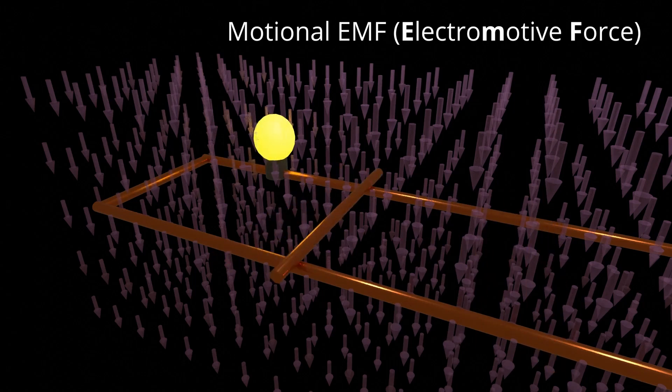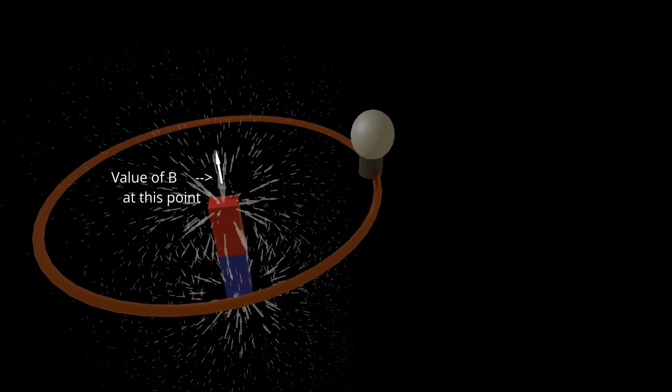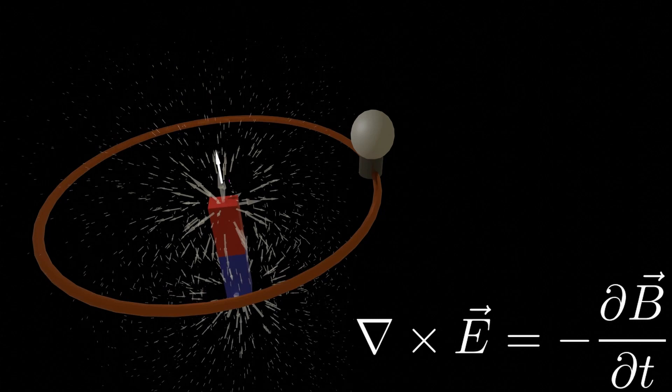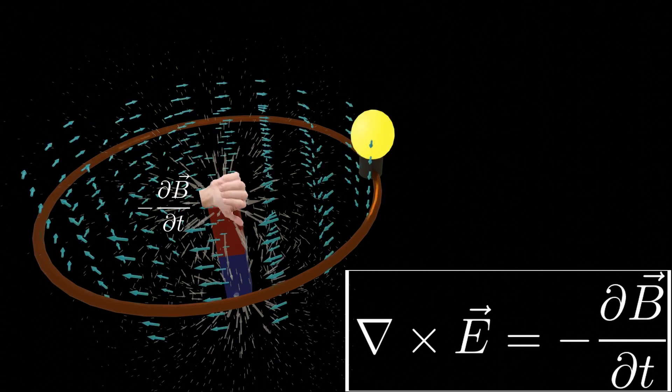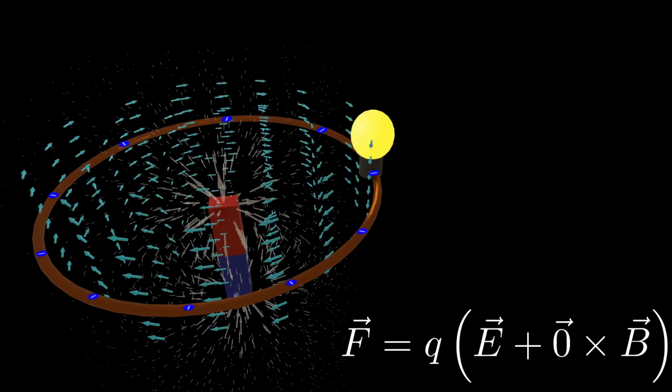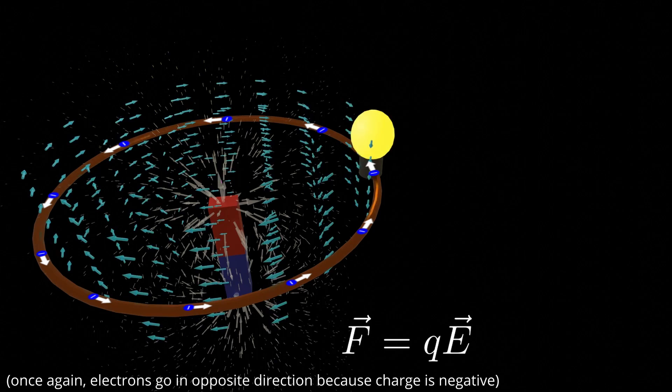What about our regular magnet coil? Well as the magnet gets nearer, Barry increases in the coil. We know that Emily curls when Barry changes and Barry is pointing more and more upward. So we flip the change vector around and use the right hand rule to see Emily's curl.